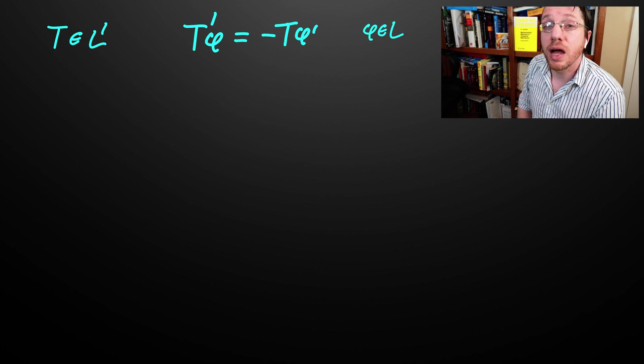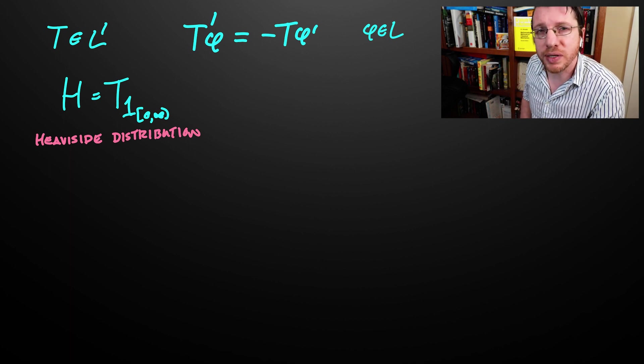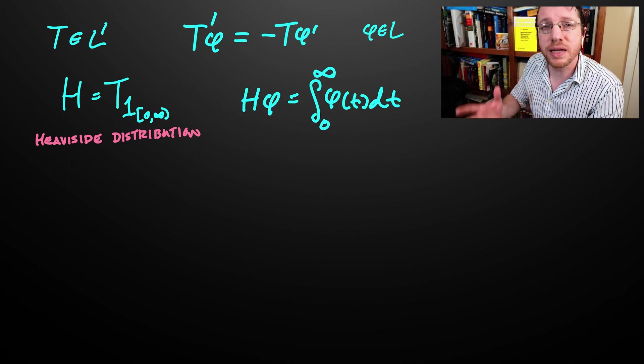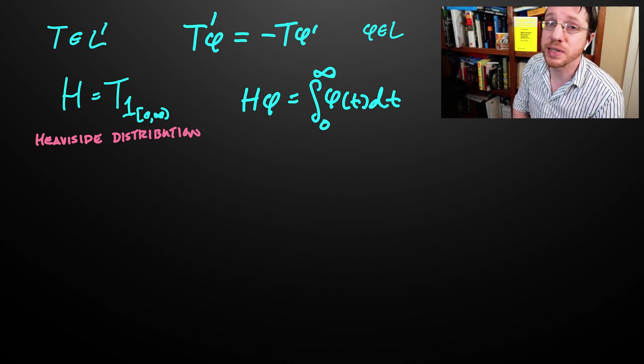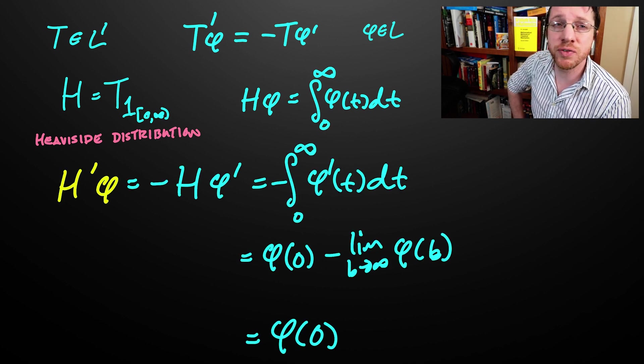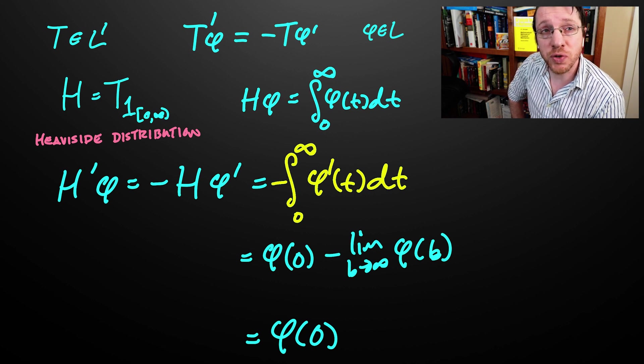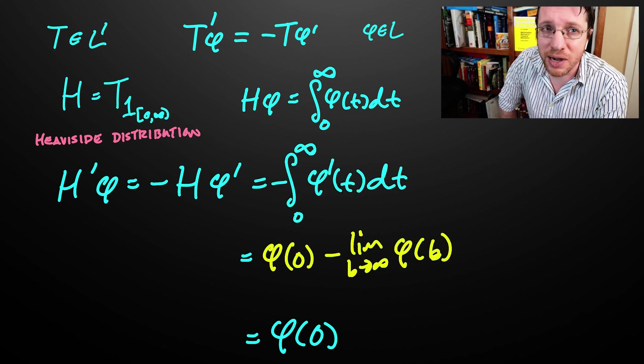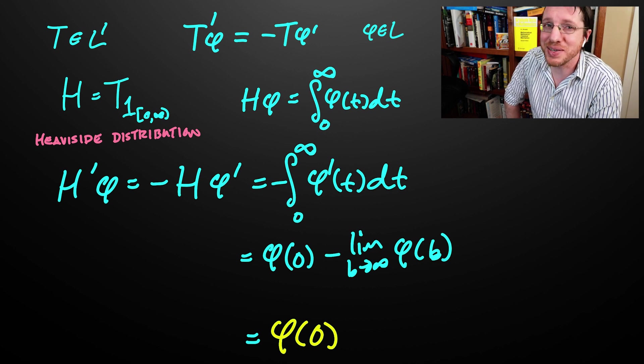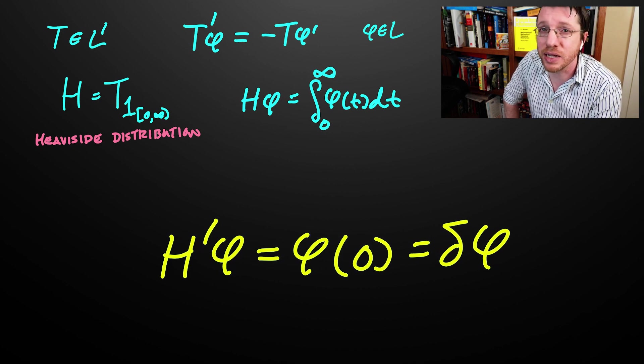And let's consider the Heaviside function. You can think of this as the regular distribution corresponding to a piecewise defined function, where f is 0 for all negative values and 1 for non-negative values. You can also think of this as the functional that sends phi to its integral from 0 to infinity. We label this functional, or this distribution, as capital H. If we take the derivative of H, then that is the functional that sends phi to the negative of H applied to the derivative of phi. This is the negative of integration from 0 to infinity of the derivative of phi. And since phi is a smooth function, this resolves itself through the fundamental theorem of calculus. And we know that the limit as phi goes to infinity is 0. Thus we are left with phi of 0. That is, the derivative of the Heaviside function applied to phi gives us evaluation of phi at the origin, which is exactly what the delta function does.